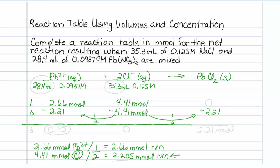Now we just have to deal with the final row. For the lead, 2.66 minus 2.21 gives me 0.45. For the chloride, it's our limiting reagent. That's 0, and for lead chloride, we start out with none. We add 2.21, so when we're done, we have 2.21 millimoles. That's for the reaction table.